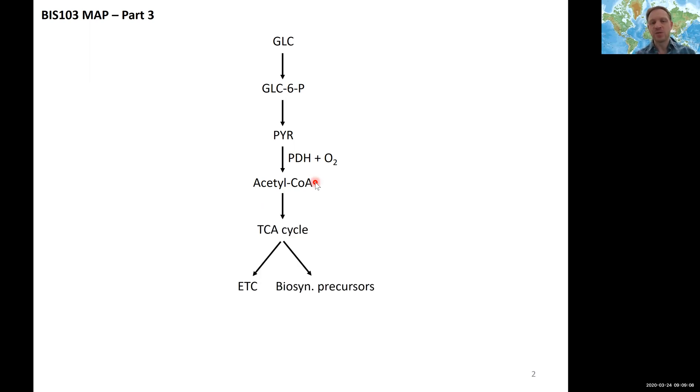Then we had talked about how acetyl-CoA can enter the TCA cycle and be decarboxylated to carbon dioxide. All the energy is going into our electron carriers NADH and FADH2. We had briefly touched on that these can go either in our electron transfer chain or we can also use the TCA cycle for the generation of biosynthetic precursors.